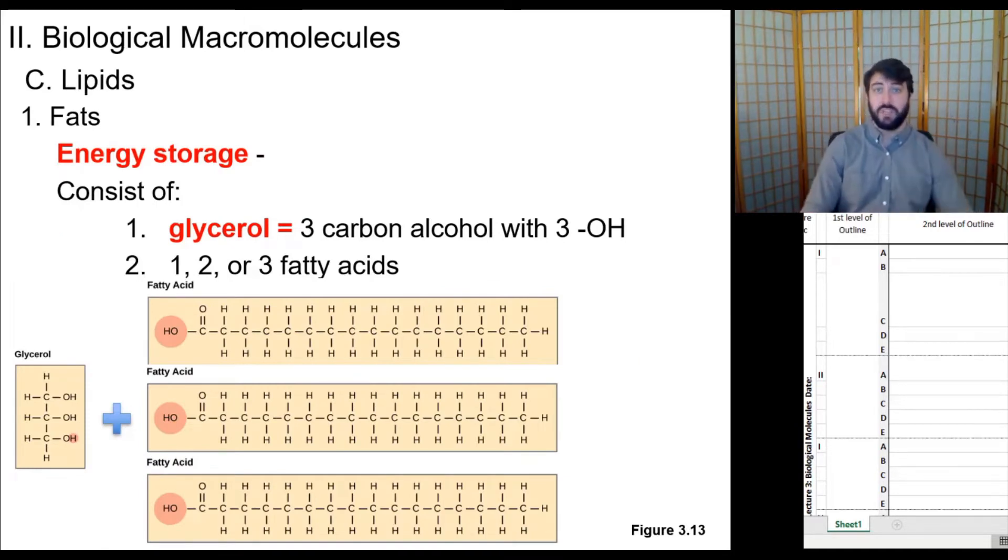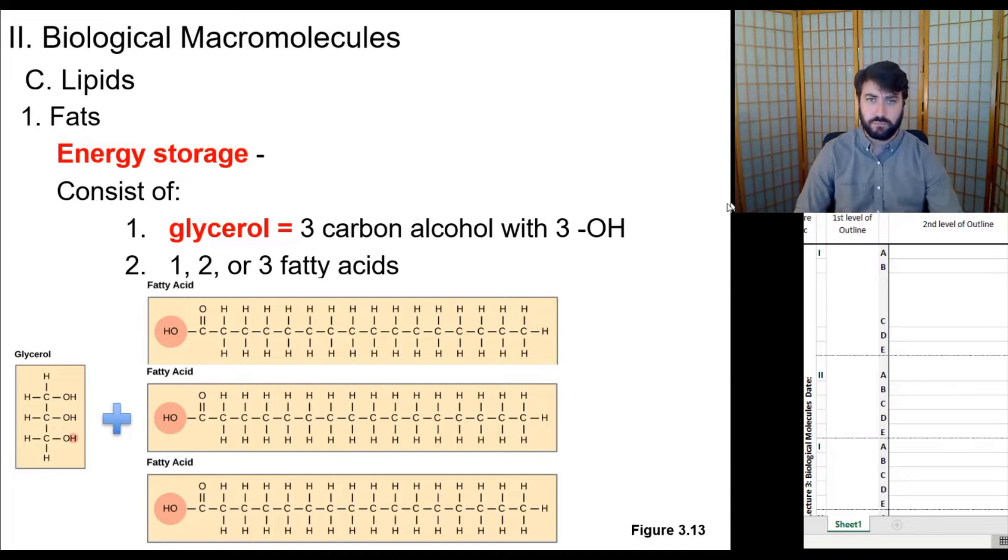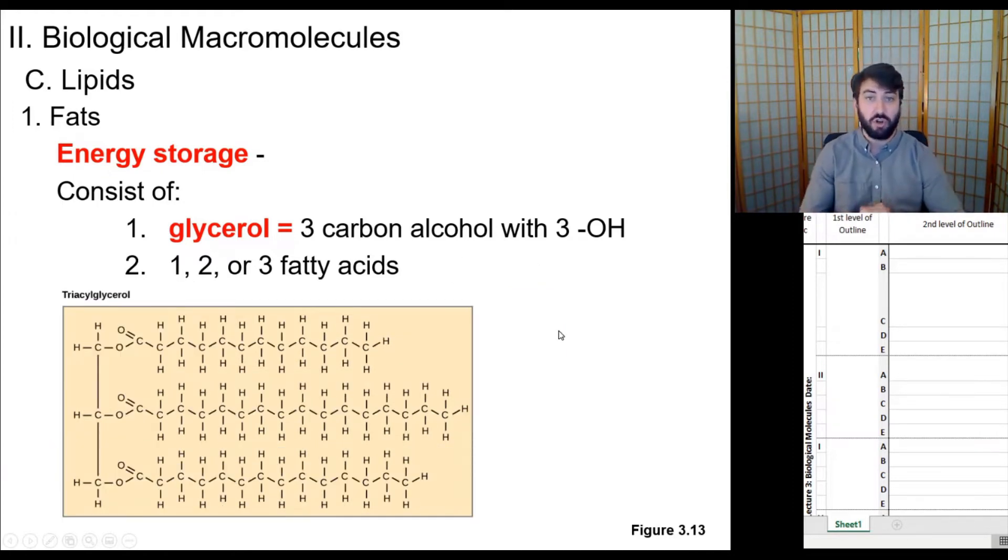The first type of lipid, fats. Fats function primarily as a form of stored energy, and they're made up of a glycerol, which is what you see right here, which is the three carbons and the three hydroxyls sticking off the edge. And then you have attached to this glycerol, these long chains that we call fatty acids, and you can have either one, two, or even three fatty acids stuck onto the end here.